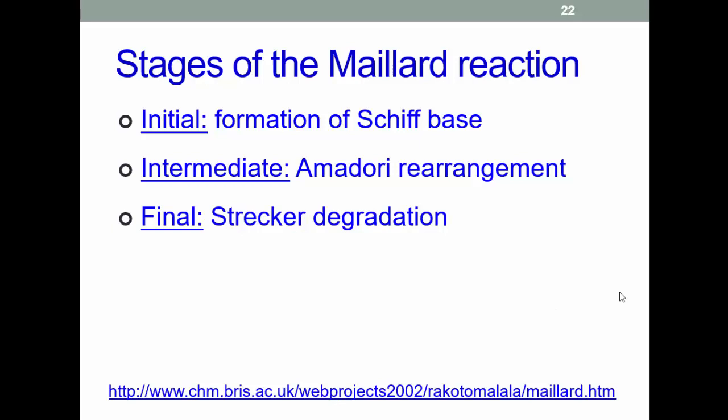If you want more details on the reaction chemistry, there are many good sources in textbooks and online. For this module, there are three stages of the Maillard reaction: the initial formation of what's called a Schiff base; an intermediate called the Amadori product; and then the final stage of Strecker degradation. After this, even more complex chemistry can take place, but that's a bit outside the scope of our discussion.